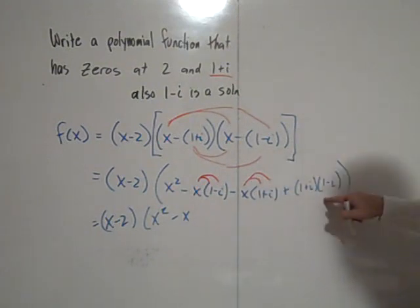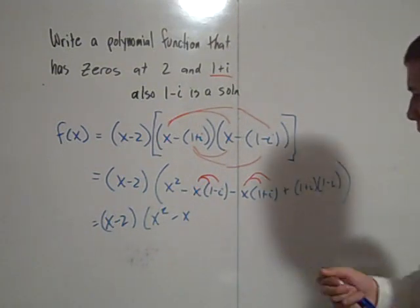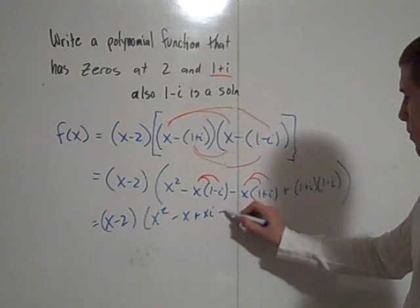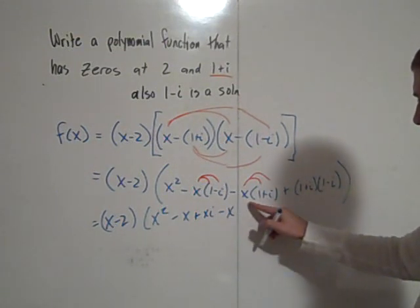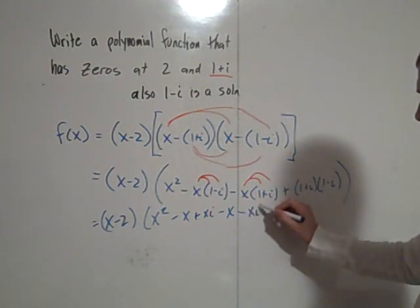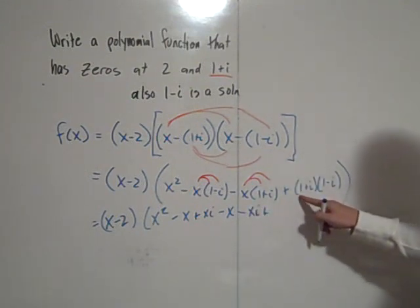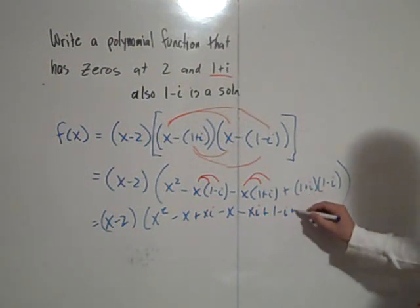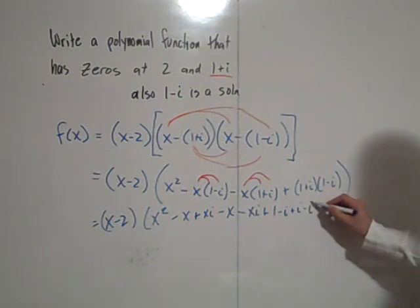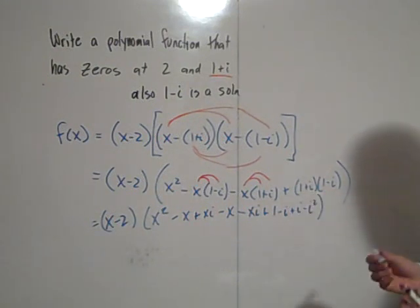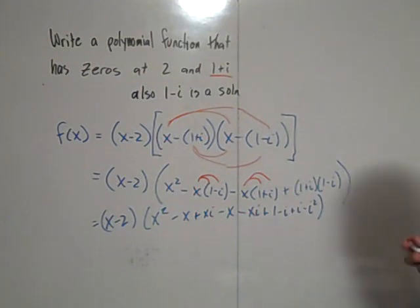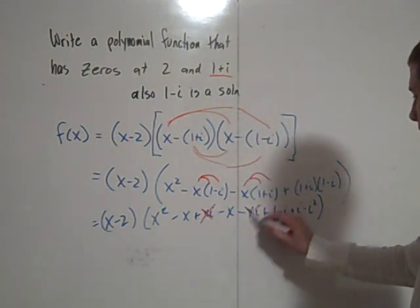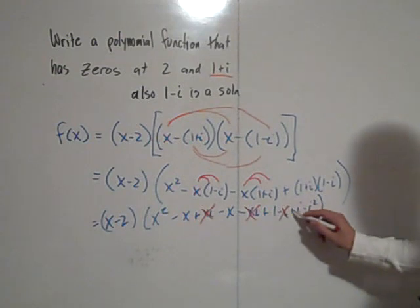And then I'm going to end up FOILing that. So I have minus x plus xi minus x minus xi plus, and I'm going to FOIL, 1 times 1 is 1, minus i plus i minus i squared. All right, well, at this point, we should look for things that cancel out. We have a positive xi and a negative xi. We have a negative i and a positive i.